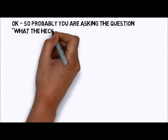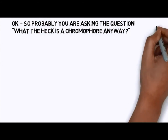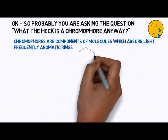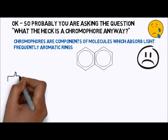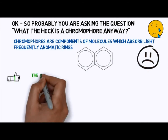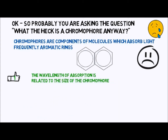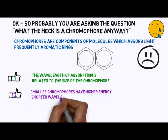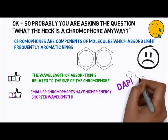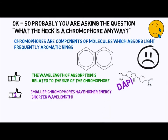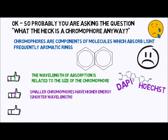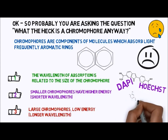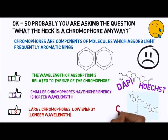So what is a chromophore anyway? Chromophores are components of molecules which absorb light, and these are often aromatic rings. There are a few rules of thumb to remember. First, the wavelength of absorption is related to the size of the chromophore. Second, small chromophores have high energy and therefore shorter wavelengths — good examples would be DAPI or Hoechst, which are both UV absorbers with very low wavelength excitation but also high energy emitters. Third, large chromophores have lower energy and thus longer wavelengths — excellent examples would be PE-Cy5 or APC (allophycocyanin), which are much larger molecules.